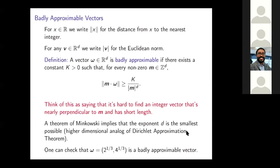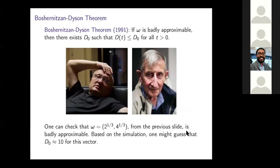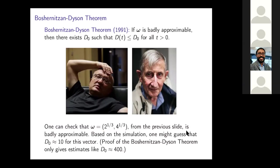There's Boschernitsyn on the left looking very casual and Dyson looking relatively casual. The theorem says that if omega is a badly approximable vector — if it's really hard to approximate the perpendicular direction to omega by an integer vector — then there's a uniform bound d₀ on the number of distinct gap lengths. This is the generalization of the three gap theorem to arbitrary dimensions. In our favorite case omega equals (2^{1/3}, 4^{1/3}), you might guess that d₀ is like 10 or something. However, if you trace through the Boschernitsyn-Dyson proof, their proof only gives you that d₀ is about 400. So one open issue is to improve upon these estimates — the estimates are very poor.